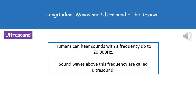Thinking about sound, there is a certain type of sound that can't be heard by humans, and that's ultrasound. As humans, we can hear sounds with frequencies up to 20,000 hertz. If we have a sound wave above that frequency, then we have an ultrasound. We can't hear ultrasound, but other animals can.